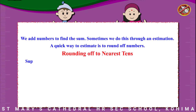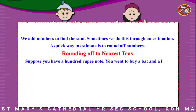Suppose you have a 100 rupee note. You went to buy a bat and a ball. The bat costs rupees 57. The ball costs rupees 22.